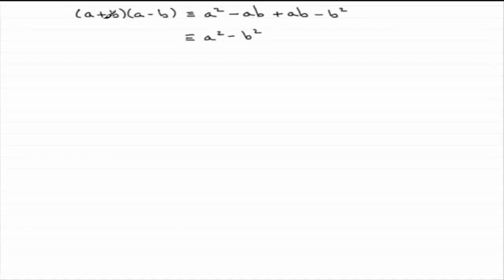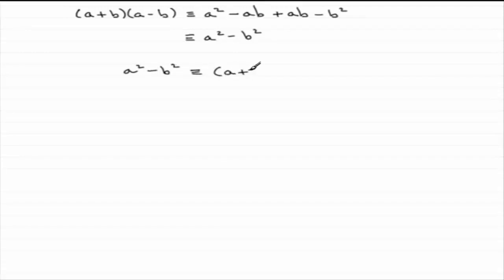So what that leaves us with is just simply a squared minus b squared. Now, whether you multiplied out a plus b with a minus b, or a minus b times a plus b, you'd always get this result — a squared minus b squared. So, reversing the process, if we've got a squared minus b squared, then this comes from a plus b multiplied by a minus b. We've got one term consisting of two factors: the first factor a plus b, and the second factor a minus b. So we've factorized a squared minus b squared.